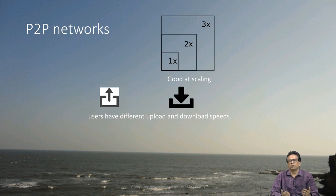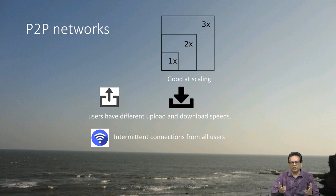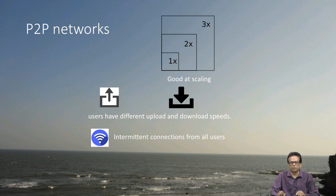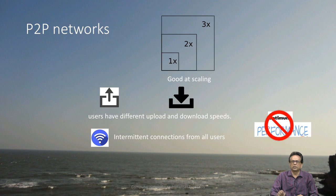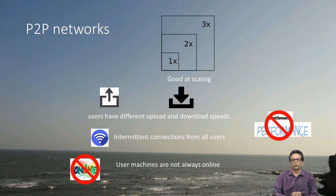Users have different upload and download speeds depending on many things, including the design of P2P networks themselves, and the connections are intermittent. So this is not a very reliable or sturdy model. Unlike the case where servers are running 24/7 and you always get a response, this might not be the case in P2P networks. There is no possibility of optimum performance here, and user machines are not always online. Sometimes you will have something available to download, and after a while you may not be able to do it.